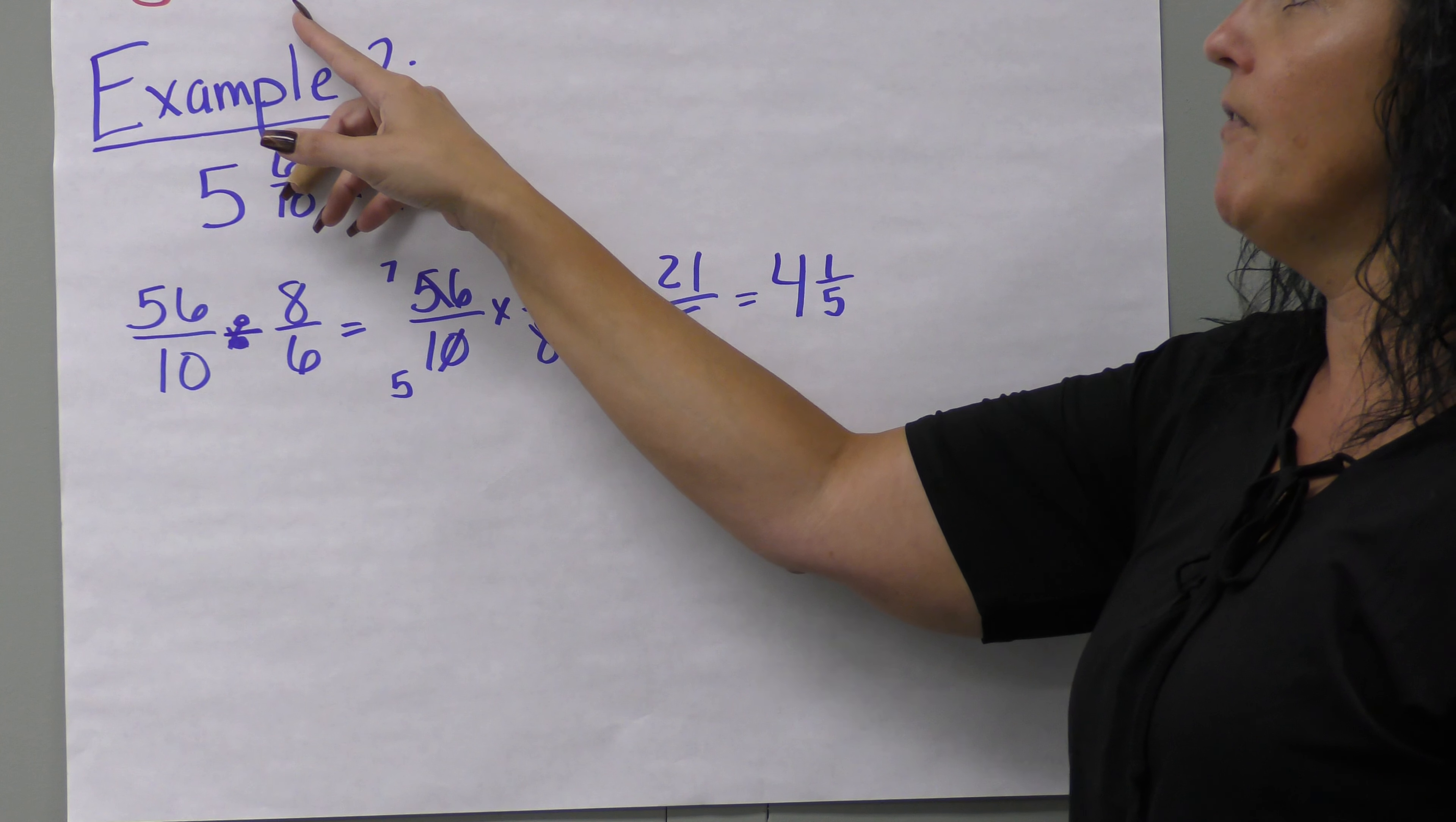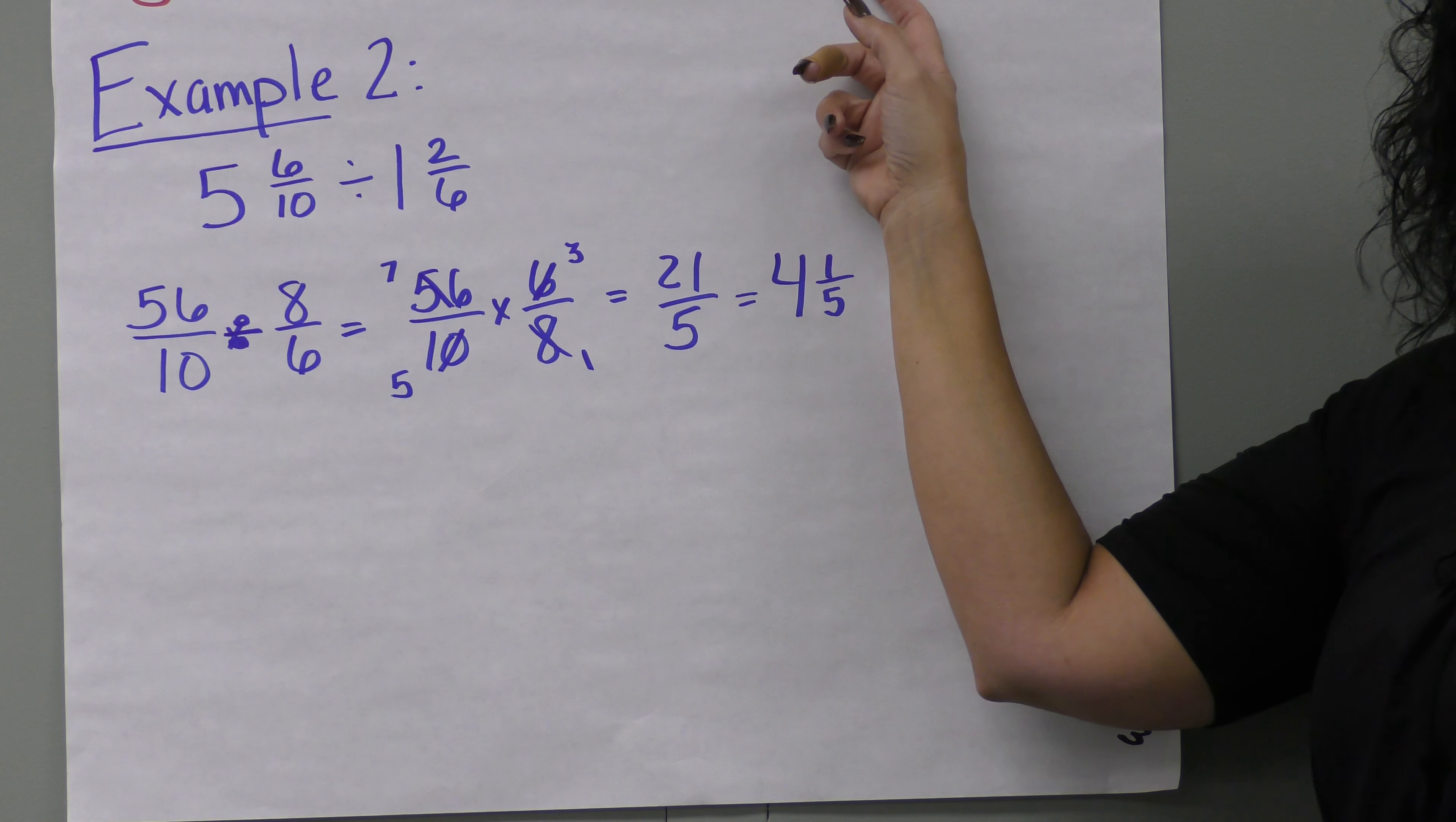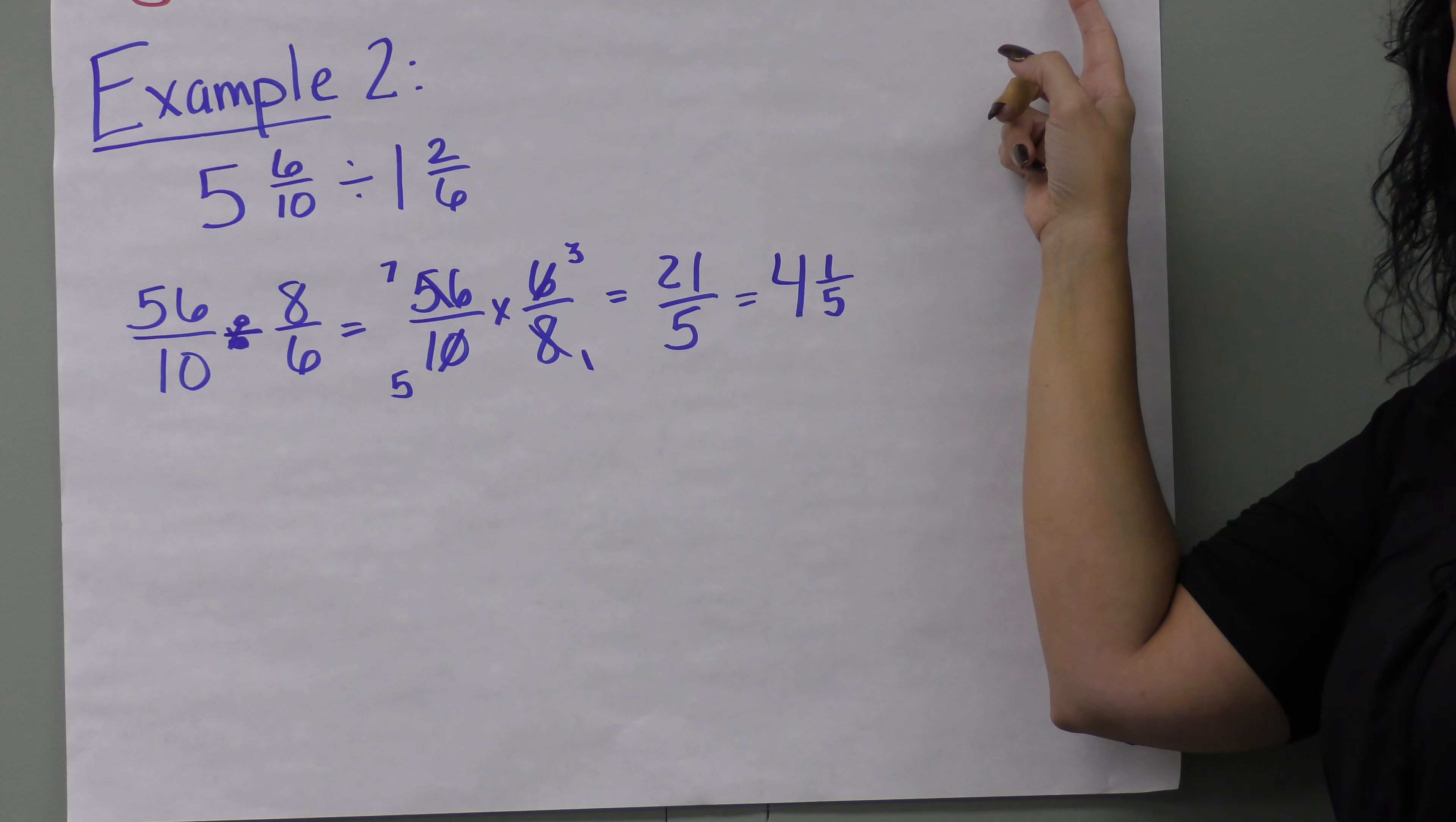Now invert the fraction we're dividing by. We have ten-thirds, and five-halves becomes two-fifths. Ten times two is twenty, three times five is fifteen. Make this a mixed number: fifteen goes into twenty once with a remainder of five-fifteenths. Reduce five-fifteenths to one-third. Our final answer is one and one-third.